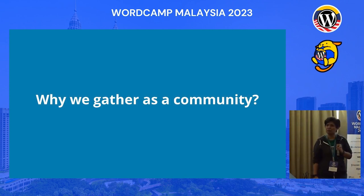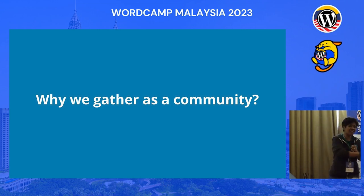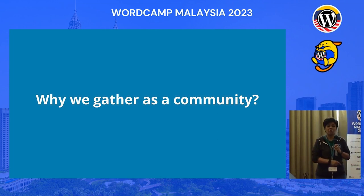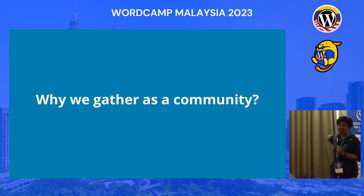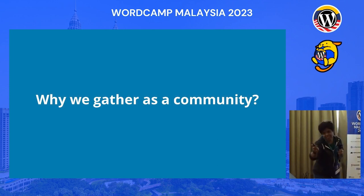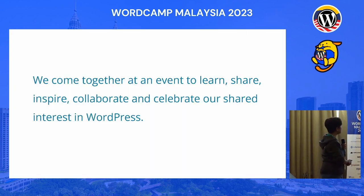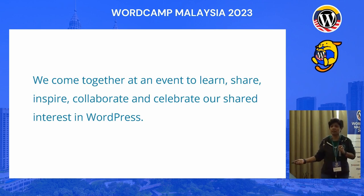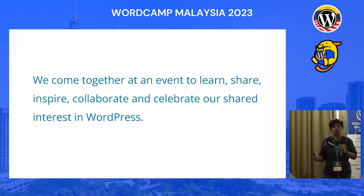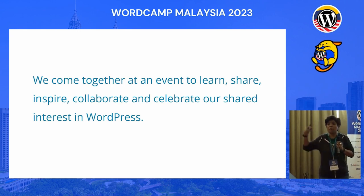Why do we gather as a community? Chiaki-san actually already shared everything about why we gather, why we want to meet people, why we make the effort to go to WordPress events — because of the Maslow diagram. So we come together at an event to learn, to share, to inspire, to collaborate, to celebrate what we love, which is WordPress. We celebrate our small, big, or medium wins. We win.